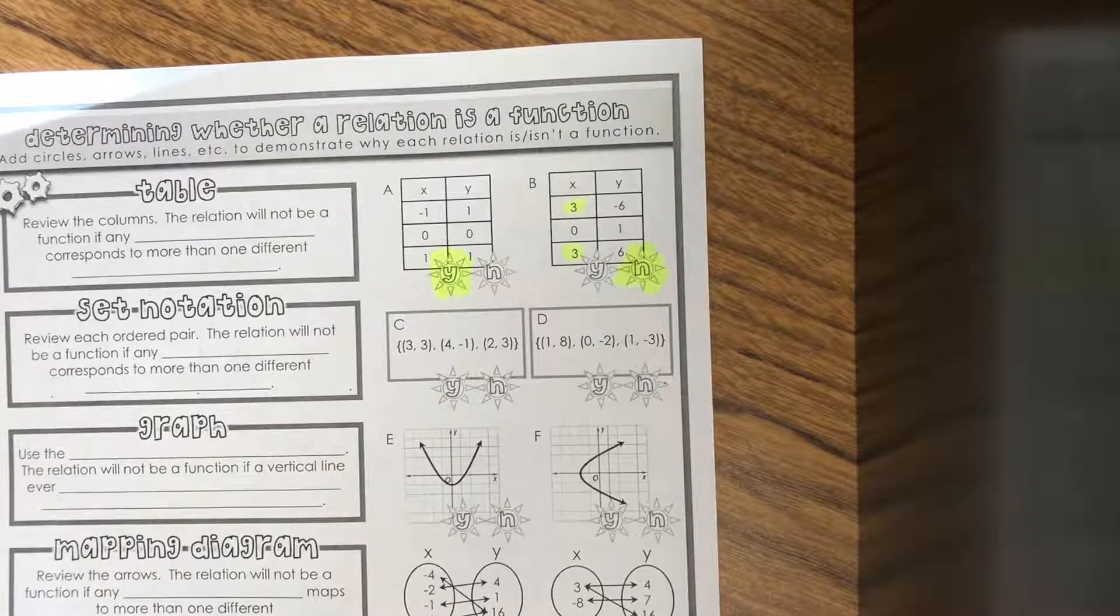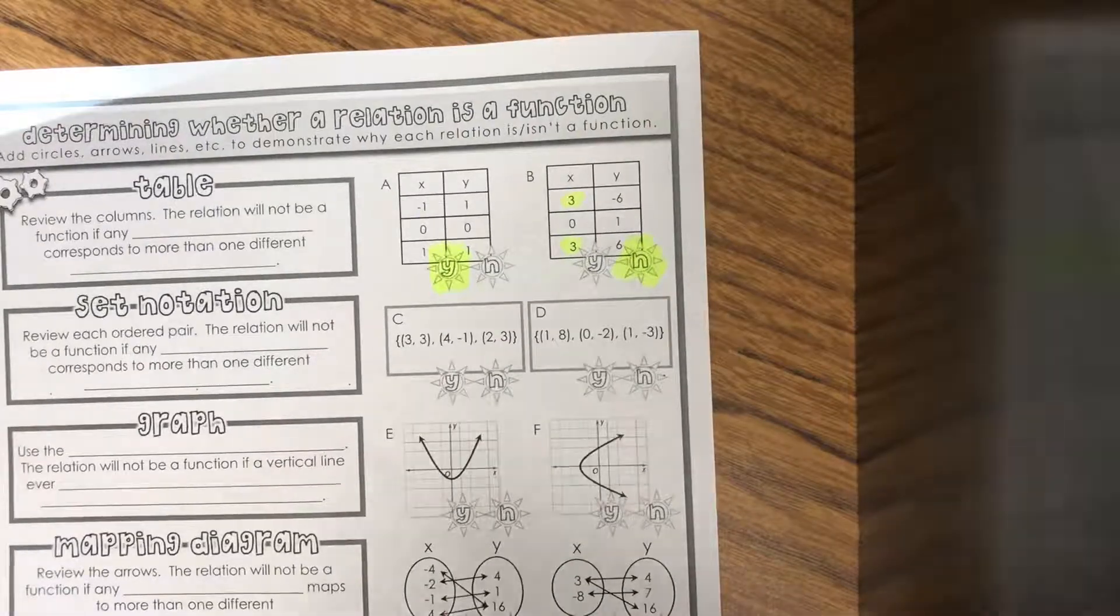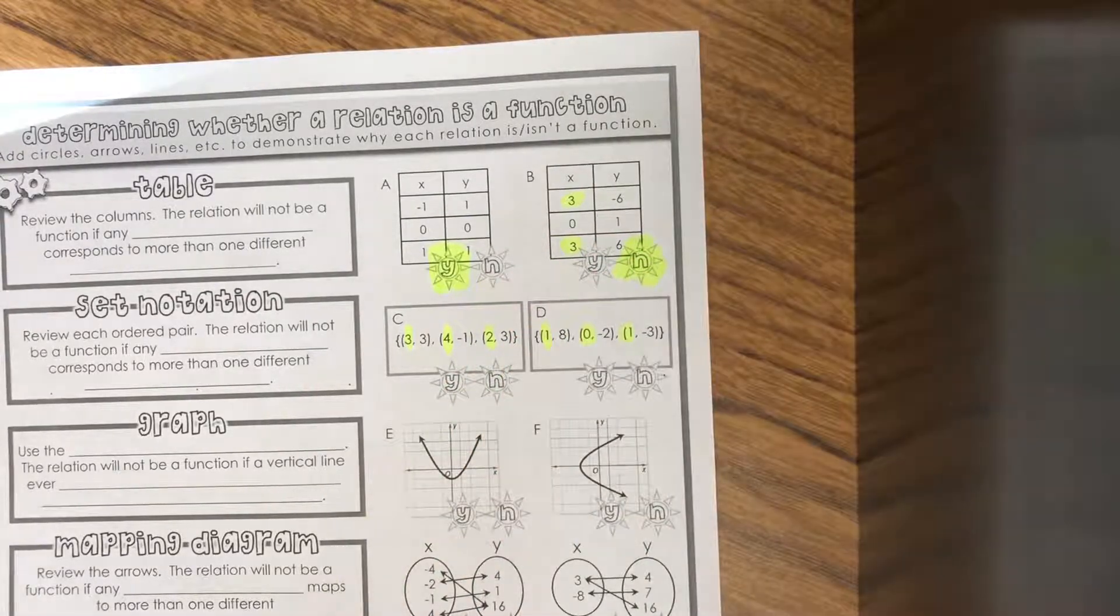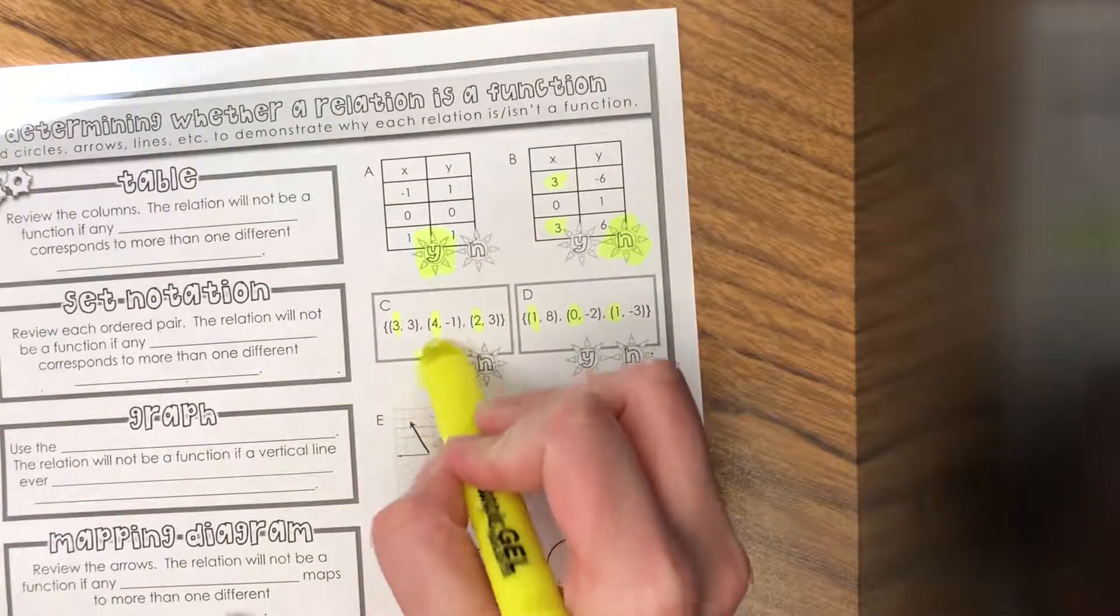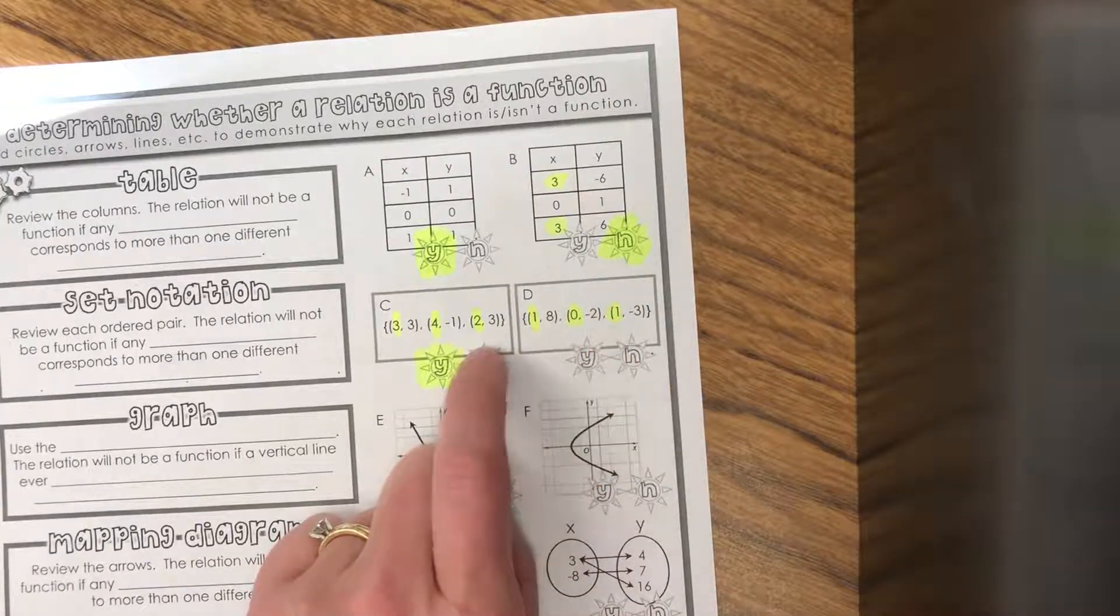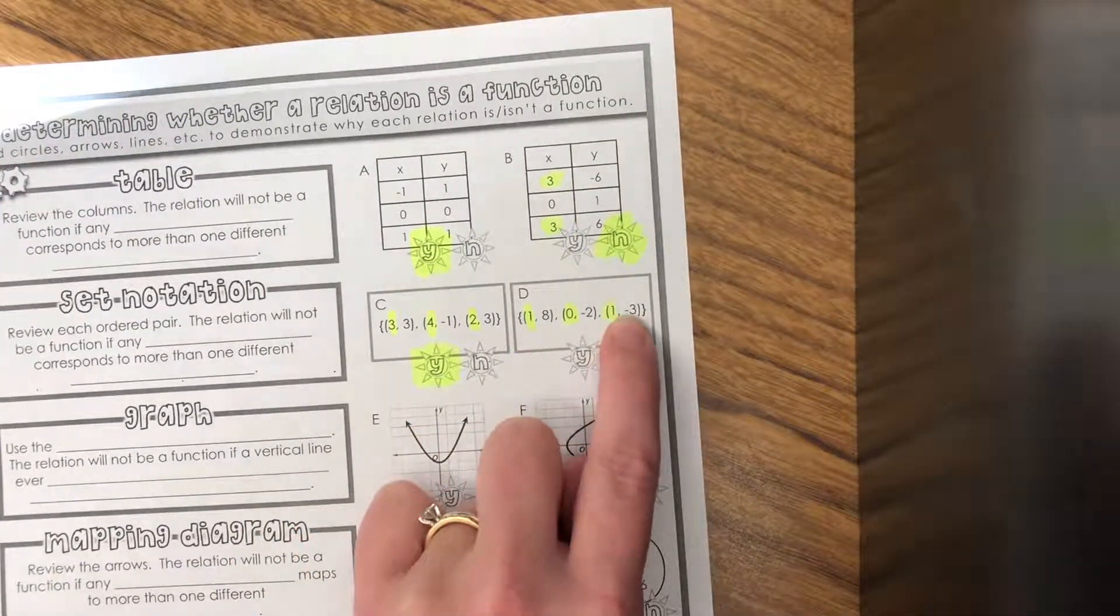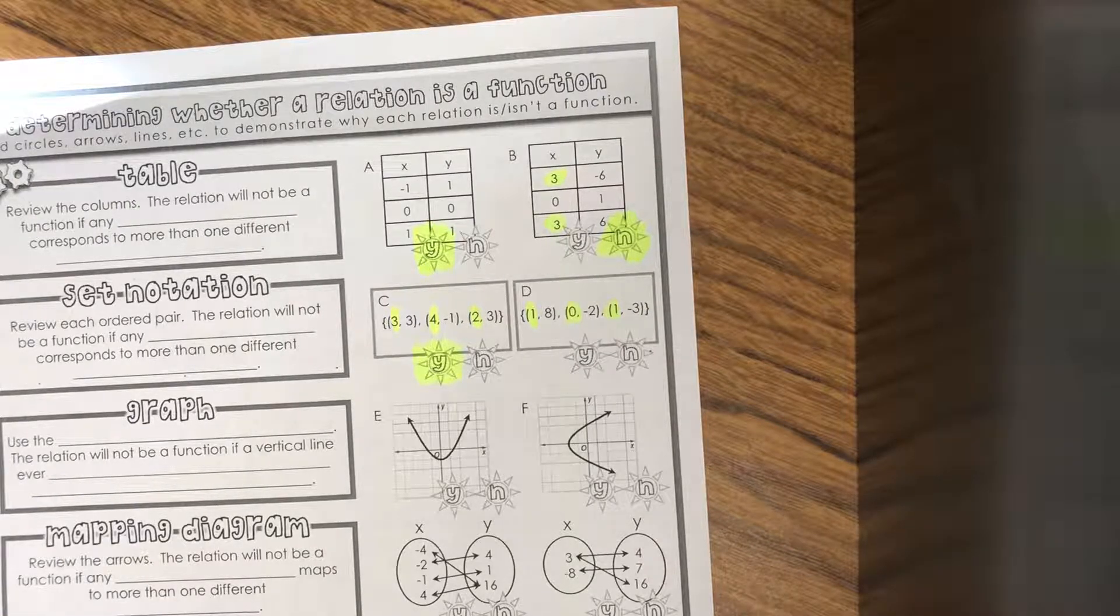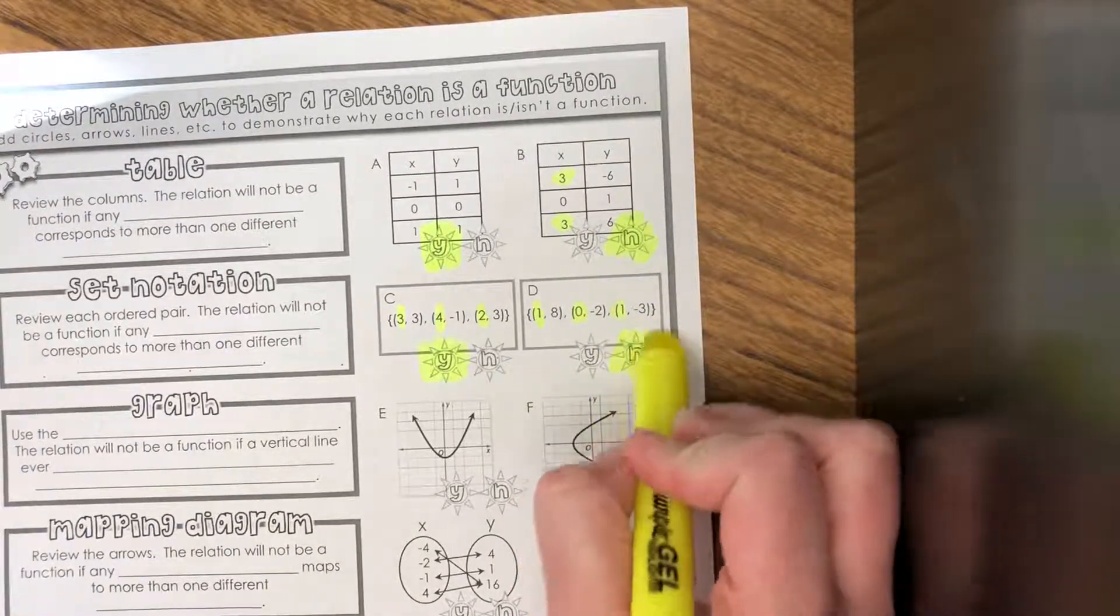Let's look at letter C. We have some ordered pairs. We need to look at the X values to see if any of them are being repeated. I'm going to go ahead and highlight my X values to make it a little easier for me. For C, none of them are being repeated, so it's a function. For D, the one is being repeated. That's a problem. For the input of one, I had an output of eight and the output of negative three. The input of one has two outputs, so that means it's not a function.